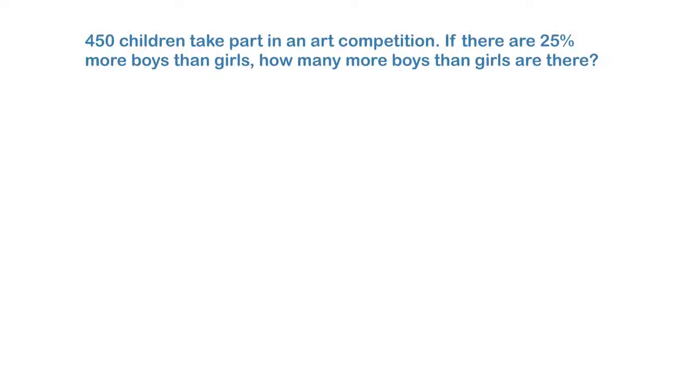Let's highlight a few things that we know that might be important. I know that the total number of kids is 450. I know there are more boys, 25% more boys. And what is the question asking me? It's asking me how many more boys. Not the total number of boys, but how many more.